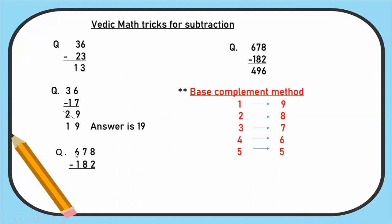Next question: 678 minus 182. Same base complement method we can use. 6 minus 1 is 5. 7 minus 8 is not possible. 7 is less than 8. So obviously 5 will reduce to 4. Then 7 minus 8 now we can do. 8 is complement to 2. So this 2 you have to add with 7. 7 plus 2 is 9. Then 1s place: 8 minus 2. Normal subtraction, 6. So answer is 496. Hope it is clear.